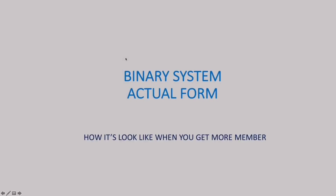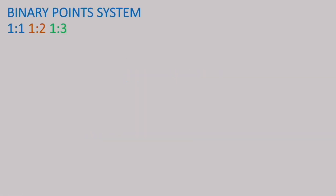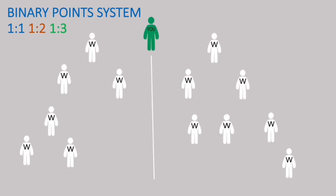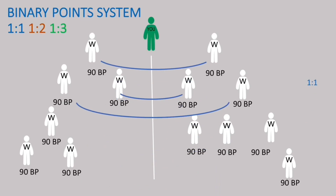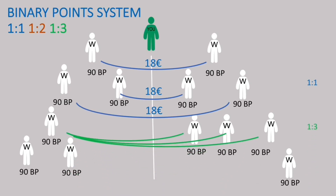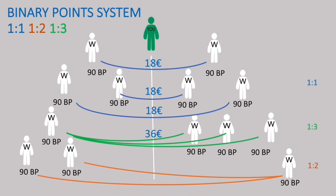Here is the actual format of the binary system — how it looks when you get more members. As we know, Crowd1's binary system has 1 to 1, 1 to 2, and 1 to 3 point ratios combined. This is you — you invite 6 white packages on your left and 7 white packages on your right, each getting 90 binary points. The 1 to 1 ratio pairs each get 18 euros; the 1 to 3 ratio set gets 36 euros; and the 1 to 2 ratio set gets 27 euros.